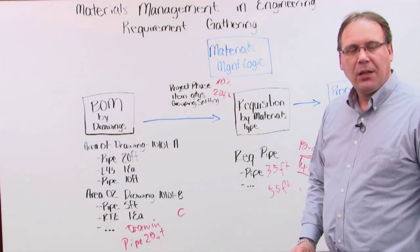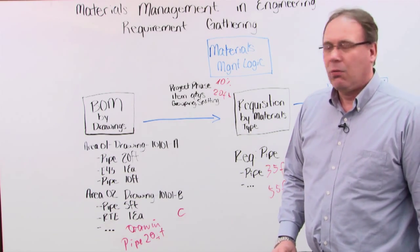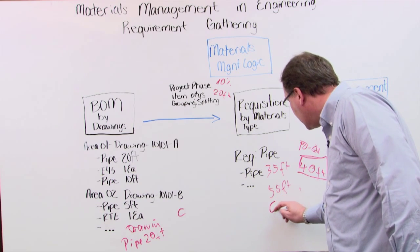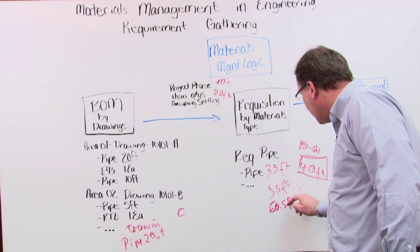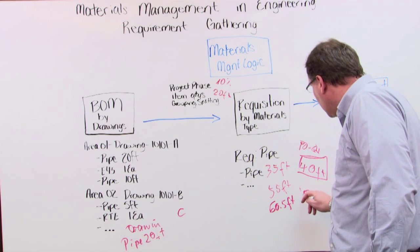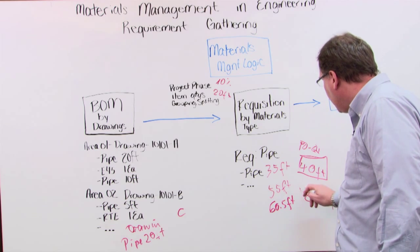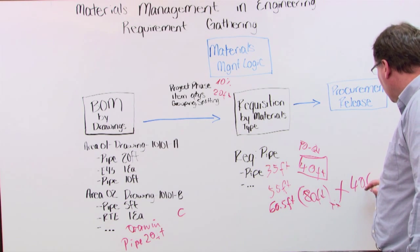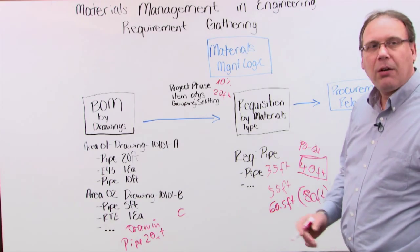You can't buy 55 foot. We said it's 10% more also, so actually I need 60.5 foot. For the next 20, actually I need 80 foot. Now that means I need to buy plus 40 foot more. So you see how it works?